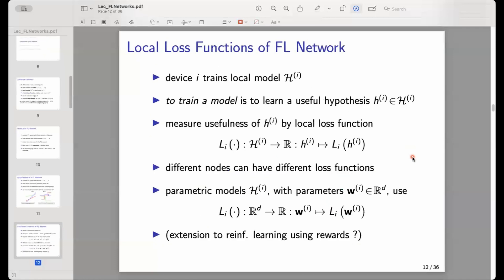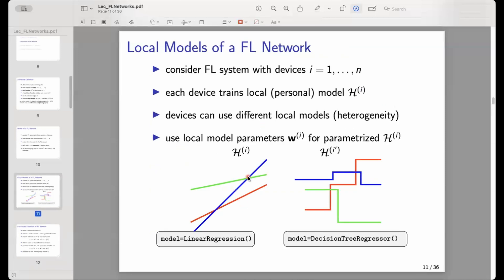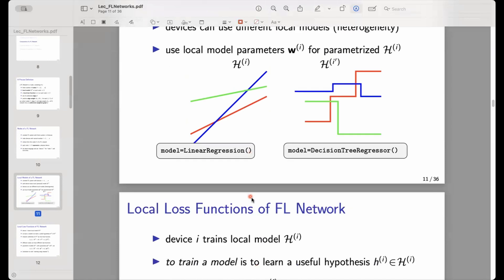Beside the local models, we also have a local loss function at each node. We need a local loss function to choose or to train a model. Training a model means to learn a useful hypothesis out of a model. For a linear model, training a linear model means to find or to learn the most useful linear map. Is it this green linear curve, is it this blue linear curve, or is it this red linear curve? This decision or choosing process is what we mean by training a model, and it means essentially to select a good hypothesis.